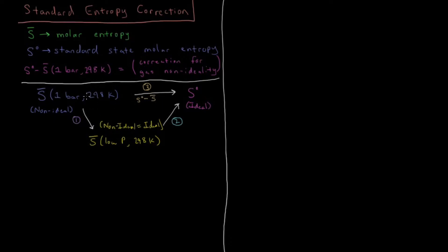We'll construct a thermodynamic cycle. We have a gas at one bar of pressure and 298 Kelvin. We can decompress it isothermally to very low pressure, then compress that gas from that very low pressure back up to one bar as if it were an ideal gas. That's equivalent to going from a non-ideal gas at standard state to an ideal gas at standard state. We calculate the entropy changes during these two steps and add them up to get the net result of the third process.